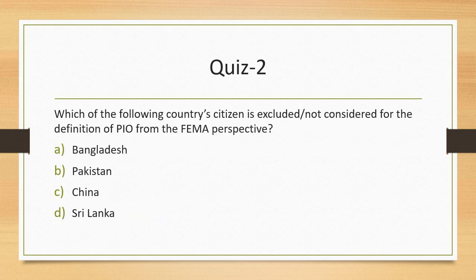Question 2: Which of the following country's citizens are excluded from the definition of PIO from a FEMA perspective? Under FEMA, certain countries' citizens are not considered when determining whether a person is a PIO. Those countries excluded from the purview are Bangladesh, Pakistan, and Sri Lanka. China, however, is NOT in the excluded list, meaning Chinese citizens can be considered under the PIO definition. The answer is C.